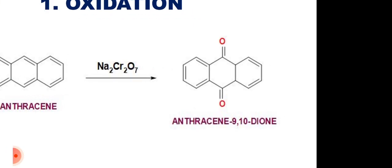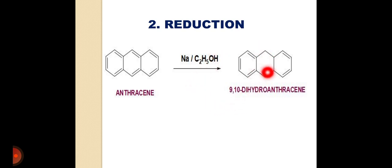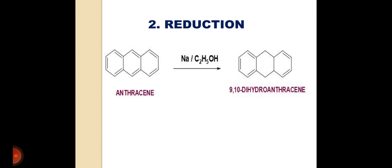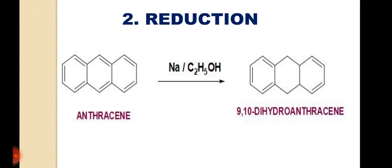The second reaction is the reduction reaction. Here the reduction takes place in the presence of sodium and ethanol. The proton given by ethanol gets attached at the 9 and 10 positions, and the product obtained is 9,10-dihydroanthracene.